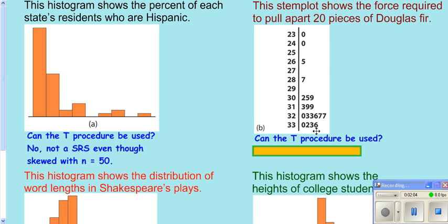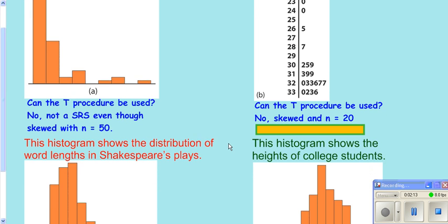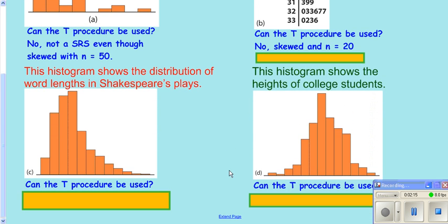Could we use it here? Well, we have 20 pieces of data. We're going to say no, you cannot because with 20 pieces of data with strong skewness, it is not acceptable according to the robustness that we talked about a little bit ago.